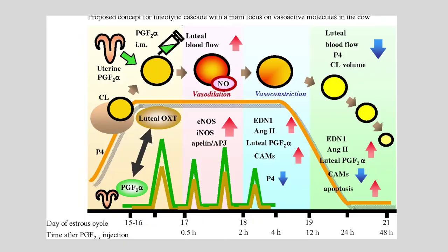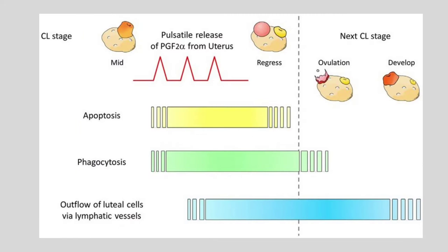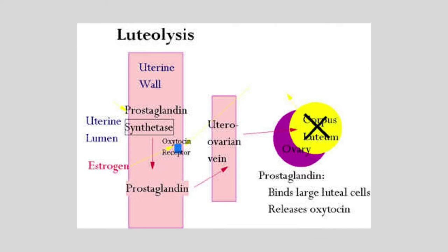If fertilization does not occur, or if embryonic signaling is insufficient, the corpus luteum will regress. Luteal regression, commonly known as luteolysis, results in pregnancy failure, but also removes the negative feedback of progesterone on gonadotrophin release, allowing for maturation and ovulation of a new follicle and another opportunity to establish a pregnancy.